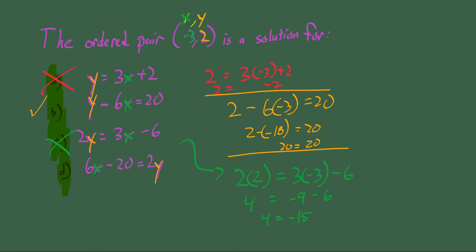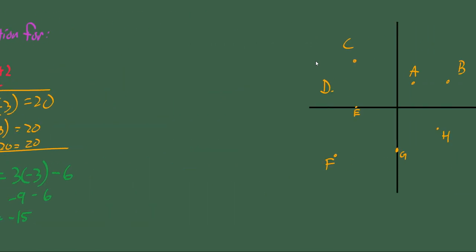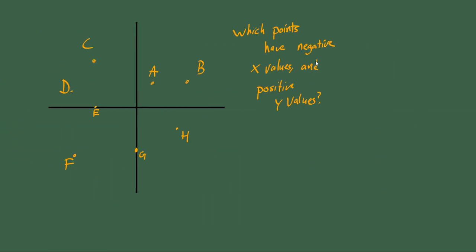Last one to check, which had better be wrong, is 6x minus 20 equals 2y. 6 times x minus 20 equals 2 times y. 6 times negative 3 is negative 18. Minus 20 equals 4. Negative 18 minus 20 is negative 38. And that is also not 4. Our left side and our right side don't balance. Only one of them works. It's B. You just plug in the values, and you see, does the left side and the right side actually balance out?